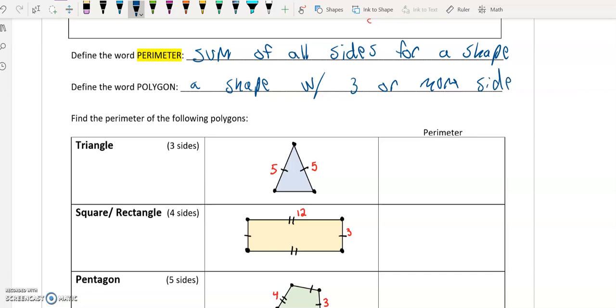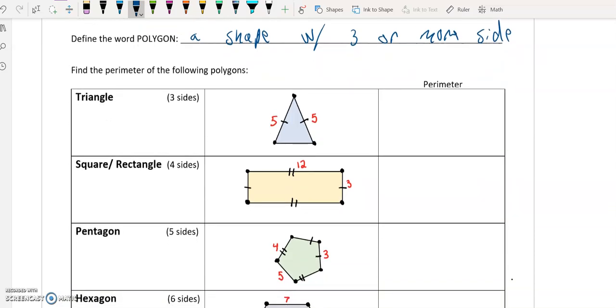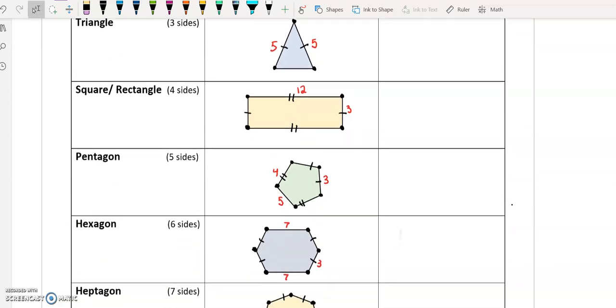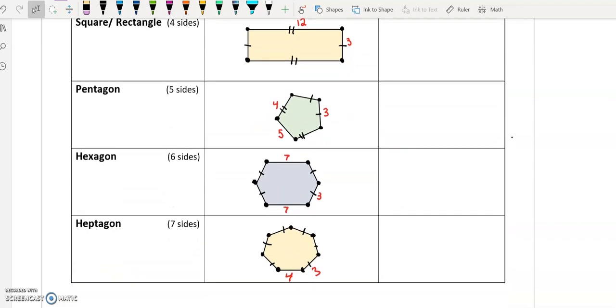Down below, I gave you a couple of examples of polygons, some of the most common polygons. We have triangles, squares, and rectangles, pentagons, hexagons, and heptagons.